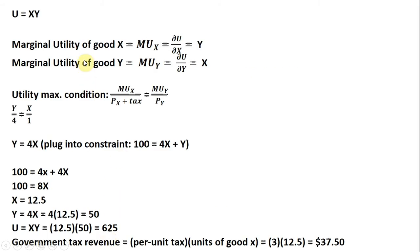Let's maximize utility by getting the marginal utility of good X and good Y. I do that here. Partial derivatives here of the utility function with respect to X gives us Y. The partial derivative of the utility function with respect to Y gives us back X. Setting up our utility maximizing condition, the marginal utility of good X divided by the price of good X plus the per-unit tax will just simply be Y divided by 4. And the marginal utility of Y divided by the price of good Y. Marginal utility of Y is X divided by the price of Y is 1. We're going to simplify that. And we get Y equals 4X, just multiplying both sides through by 4.